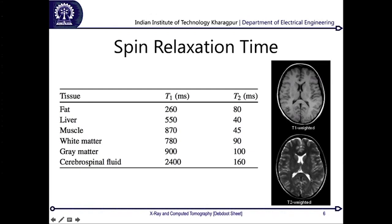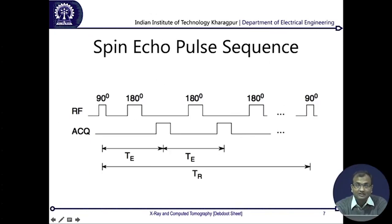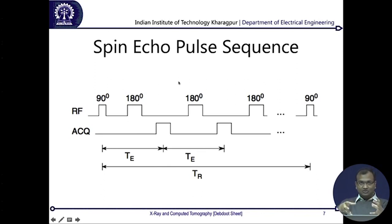Comparing CSF with surrounding structures: CSF fills the intermediate cavity in the brain and has much higher values for both T1 and T2. In T1-weighted imaging, since it is a difference image between T1 and T2 times, CSF comes out as dark. To generate both T1 and T2, we need to generate a specific pulse repetition rate.